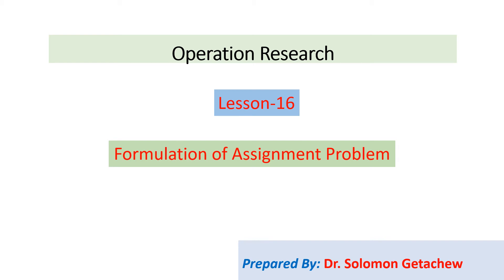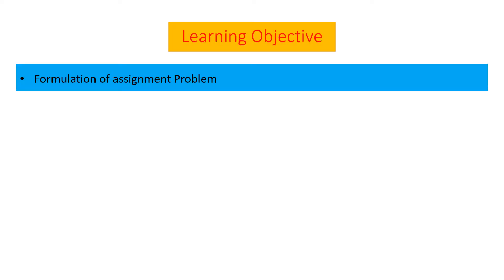Hello everybody and welcome to lesson 16: Formulation of Assignment Problem. The learning objective of this lesson is to formulate an assignment problem from a real business problem — that means we are formulating the linear programming model, specifically called the assignment problem, from a real practice problem.